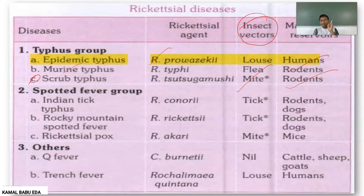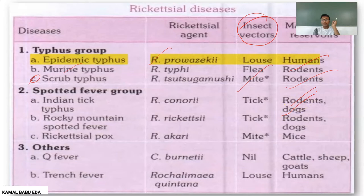In the Spotted Fever group we have Indian Tick Typhus, Rocky Mountain Spotted Fever, and Rickettsialpox. Indian Tick Typhus is mainly caused by Rickettsia conorii; the insect vector is tick and the mammalian reservoirs are rodents and dogs.